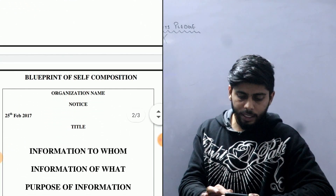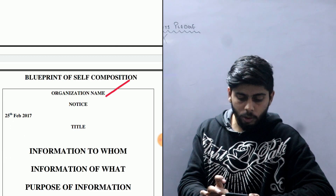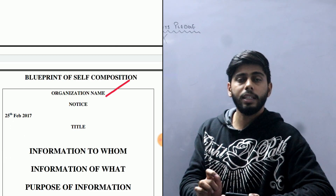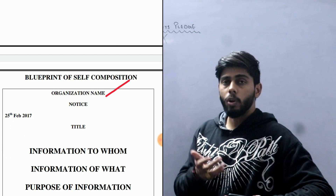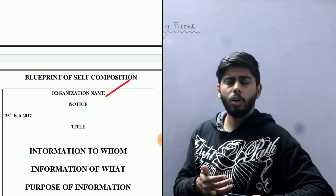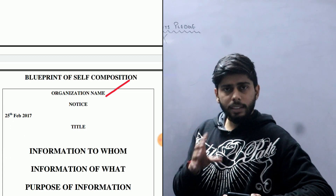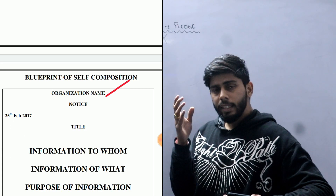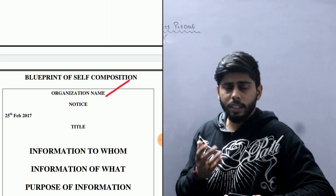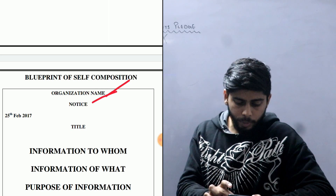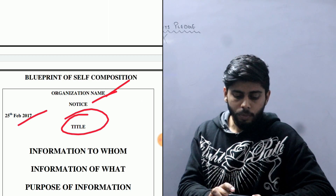Now I have a blueprint for notice composition. First is the organization's name — the organization that is drafting the notice. Many times it can be an RWA (Resident Welfare Association) from your colony, drafting a notice to invite or call members for a meeting. So whether it is a company, a society, or a school — if the school question comes, you write the school name. After the organization name, we have a date and a title.